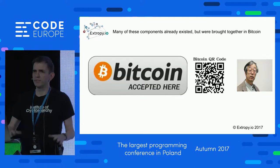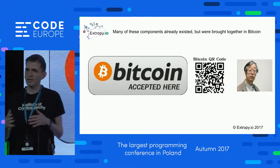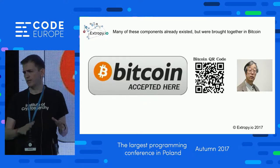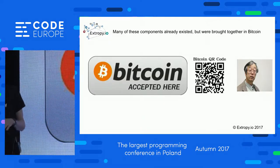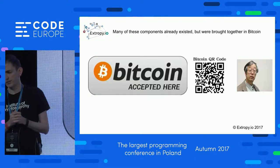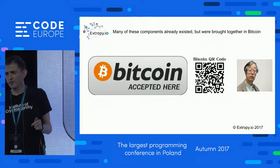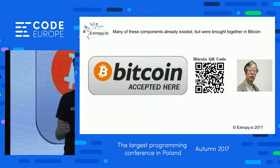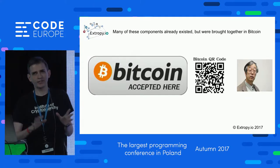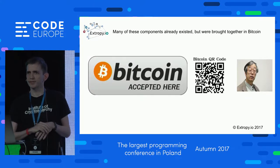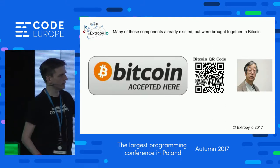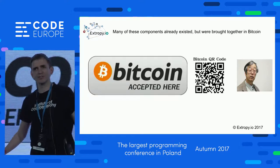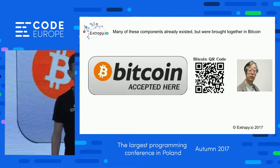These ideas have been around since the 70s. People started thinking about using them in the early part of the century, but it's really only in 2009 that it all came together with a concrete implementation — Bitcoin. In 2008/2009, a paper was produced by a person called Satoshi Nakamoto. Nobody knows who Satoshi is — his identity is obscure. This particular person was accused of being Satoshi and had to get his lawyers to deny it.